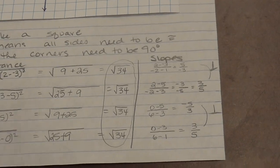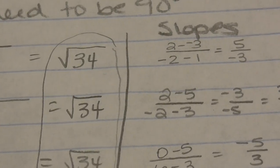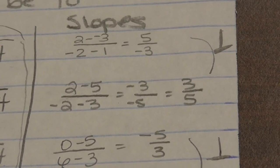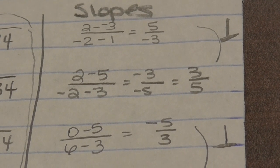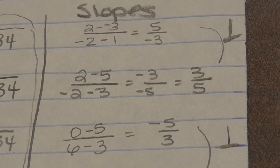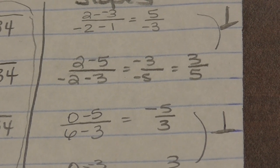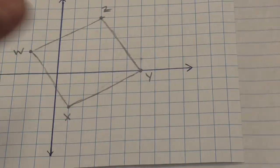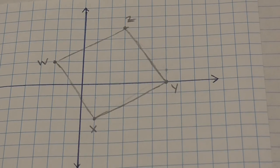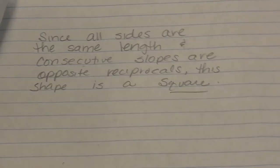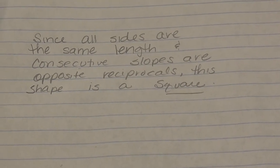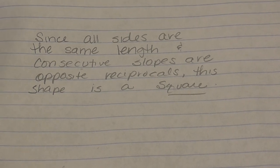Then using the slope formula, the slopes come out to negative 5 over 3 and positive 3 over 5 — those are opposite reciprocals, so those two sides are perpendicular. Then 3 over 5 and negative 5 over 3 — perpendicular again. We're seeing a pattern: every consecutive pair of slopes is an opposite reciprocal, meaning every corner is 90 degrees. Since all sides are the same length and consecutive slopes are opposite reciprocals, this shape is a square.